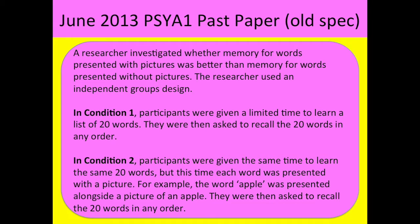In condition 1, participants were given a limited time to learn a list of 20 words, and they were then asked to recall the 20 words in any order. In condition 2, participants were given the same time to learn the same words, but this time each word was presented with a picture — for example, the word apple was presented alongside a picture of an apple. They were then asked to recall the 20 words in any order.